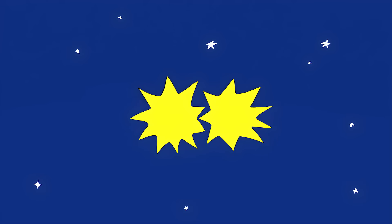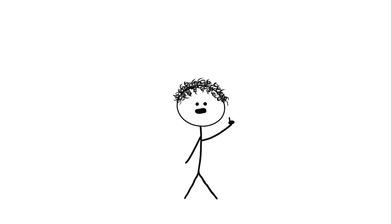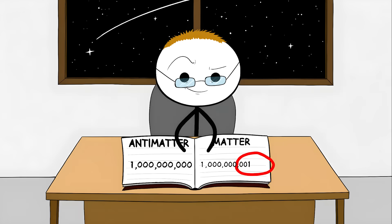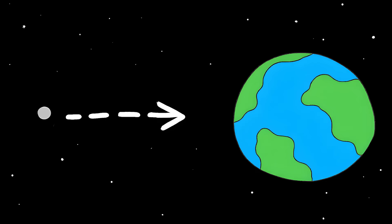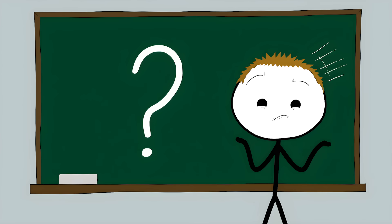So if the universe made equal amounts of both, everything should have cancelled out. The whole universe should just be empty space filled with light. But something went wrong. For every billion particles of antimatter, there was a billion and one particles of matter. That tiny 0.0000001 percent difference, that cosmic accounting error, is what made everything.